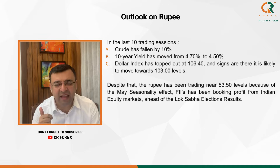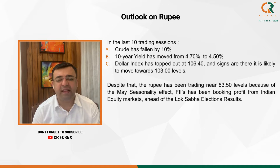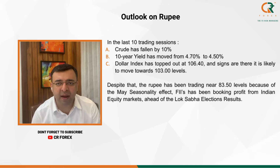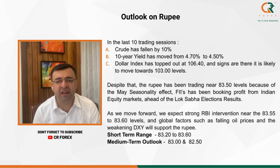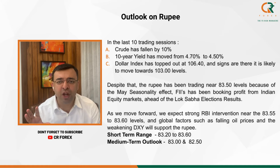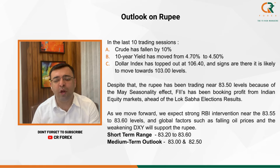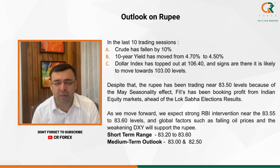The first reason is May seasonality, where import payments are generally higher. The second reason is that FIIs have been selling from Indian equity markets ahead of Lok Sabha election results. Going forward, we are expecting that RBI will intervene strongly near 83.55 to 83.60. Apart from that, global factors like falling oil and a falling dollar index are going to support the Rupee.